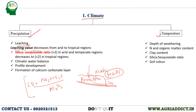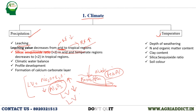Leaching value will differ between arid and tropical regions. In tropical regions, rainfall is more, so more silica will get leached away, making the leaching value low — the denominator increases compared to the numerator. In arid regions, rainfall is less, so leaching of bases and silica is less, and deposition of iron and aluminum oxides is also less, making the leaching value higher. So leaching value decreases from arid to tropical regions — arid regions have high leaching values compared to tropical regions.